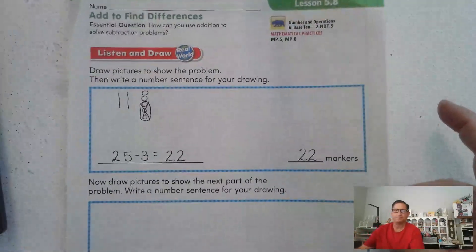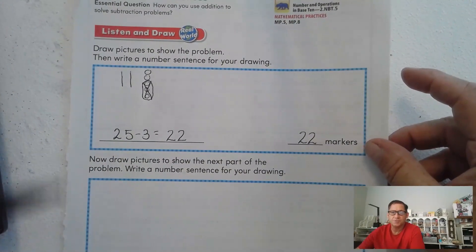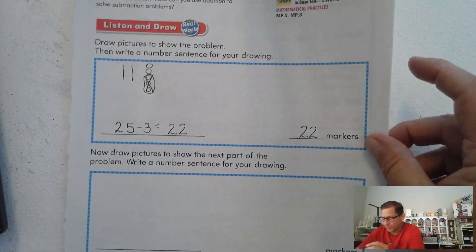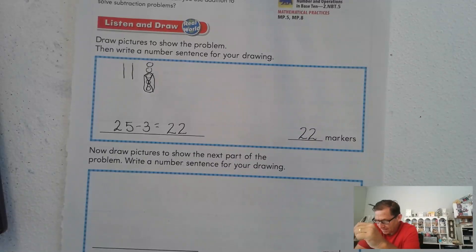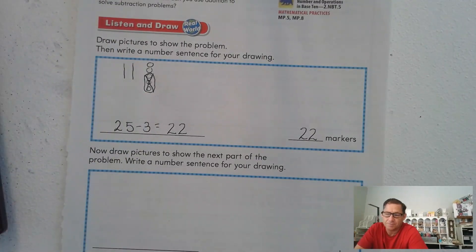Now, on this next part, again, I want you to draw a picture to show the next part of this problem and write a number sentence for your drawing. So what would happen, or how many markers will Sophie have if Josh gives the three markers back to her? So go ahead and show a picture to show that problem and then write a number sentence on the line and show me how many markers she'll have. Go ahead and pause the video until you're finished.